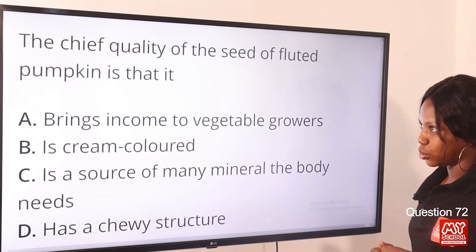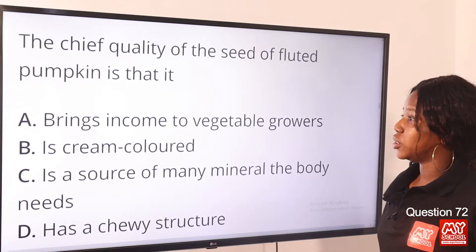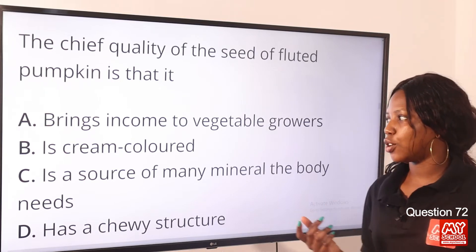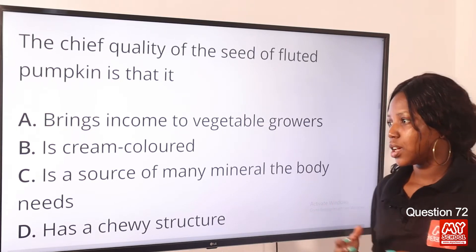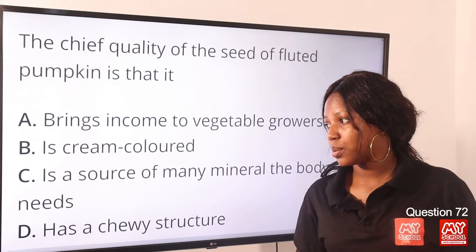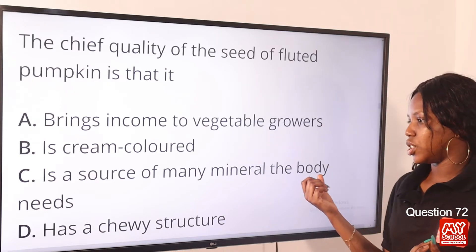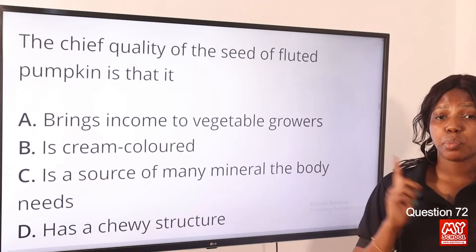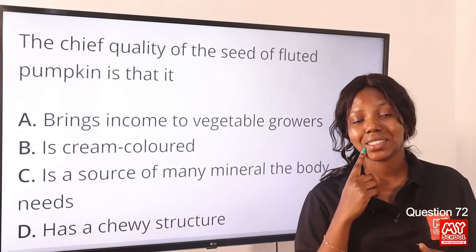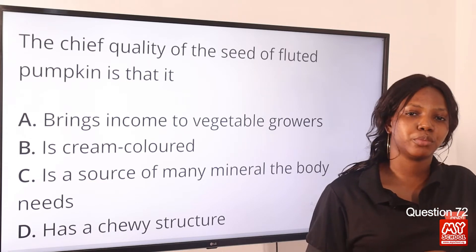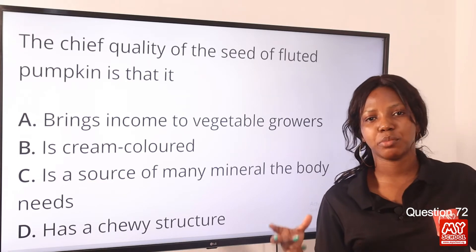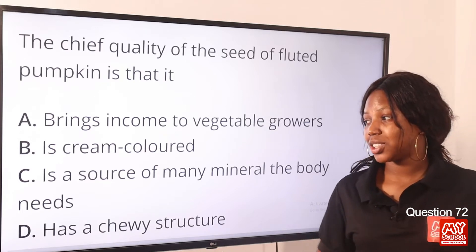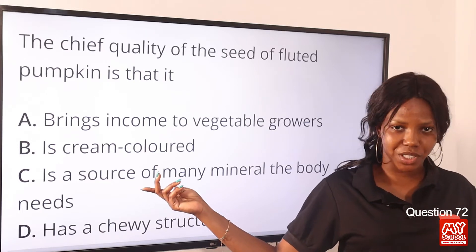Question 72. The chief quality of the seed of fluted pumpkin is that it — option C — is a source of many minerals the body needs. In paragraph 2, we learned that the seeds have proven to be a source of nutrients required by the body. So option C is the correct answer.